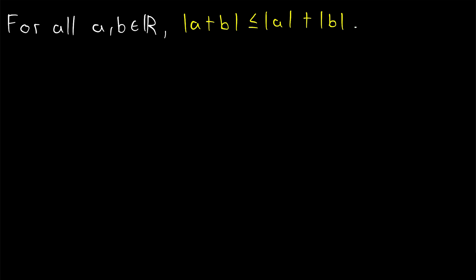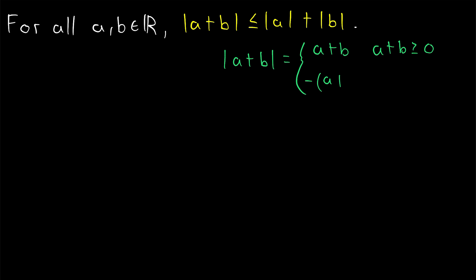So let's go ahead and get into the proof. We want to keep in mind the definition of absolute value in order to help us through this proof. The absolute value of a plus b is going to be equal to a plus b if a plus b is non-negative, so greater than or equal to 0. On the other hand, the absolute value of a plus b will be equal to negative a plus b if a plus b is negative.